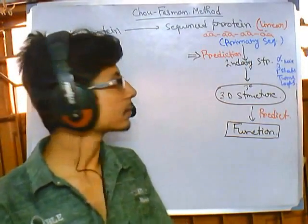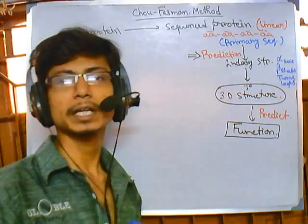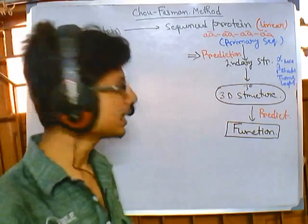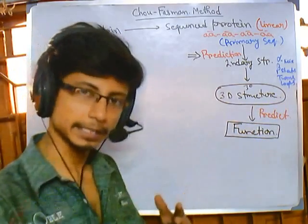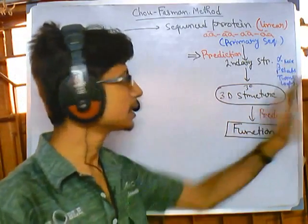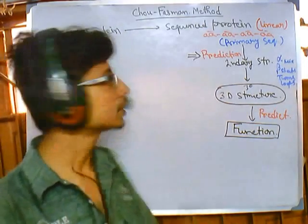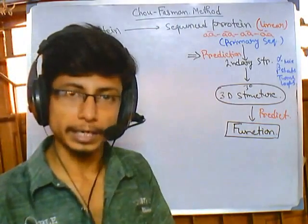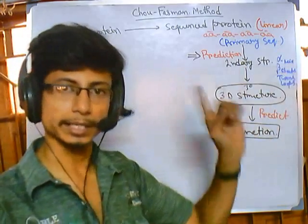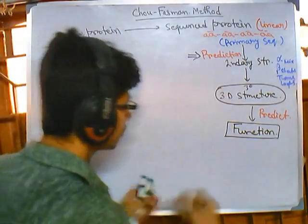An important thing before discussing: secondary structures of proteins are mostly made up of either alpha helix or beta sheet. We will be focusing on how the Chou-Fasman method tells us, by looking at the primary structure, whether it is going to form an alpha helix or a beta sheet. The most important terminology here is the propensity value — you need to understand this before the discussion.